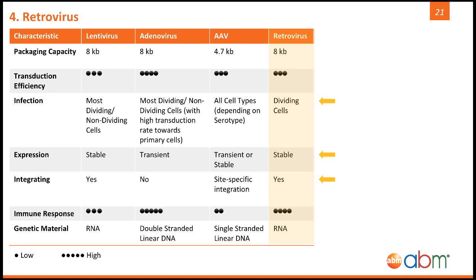Moving on to retroviral vectors. Retroviral vectors are similar to lentiviral vectors, except they cannot transduce non-dividing cells. The main benefit of using retroviral vectors, however, is their transduction of immune cells. Recent publications have shown greater transduction of immune cells, such as B cells or T cells, than lentiviral vectors. If you are looking for stable expression of your gene of interest in an immune cell type, you may want to consider retroviral vectors.